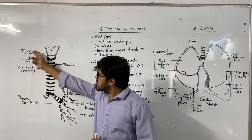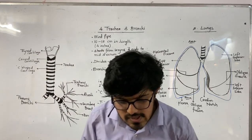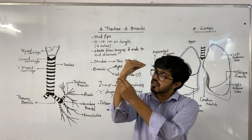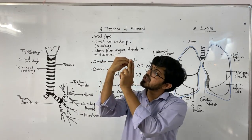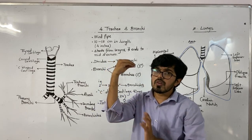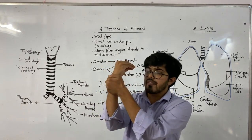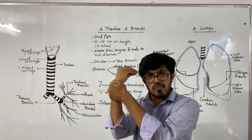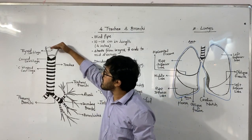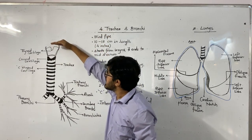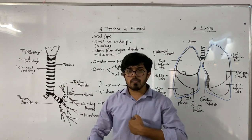Starting with the trachea — thyroid cartilage and cricoid cartilage are present on the larynx, which we studied yesterday. To revise: suppose my hand represents the respiratory tube — nasal chamber, pharynx, and trachea. Larynx is not a pipe; it is a covering present on the trachea responsible for sound production. The starting point of trachea is from the location of larynx, and it goes down into the thoracic region up to mid-sternum.